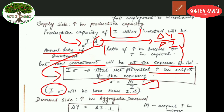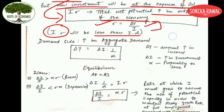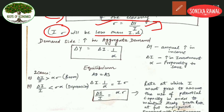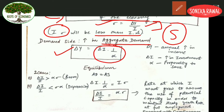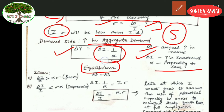Moving to the demand side — aggregate demand plays an important role, and whenever aggregate demand is present, there is also a role of saving. Here, ΔY equals ΔI multiplied by 1/α, where ΔY is your annual increase in income, ΔI is your increase in investment, and α represents your propensity to save. Out of your income you save some amount, and the remaining amount you spend, which generates your aggregate demand. In equilibrium, demand equals supply, so AD equals AS.